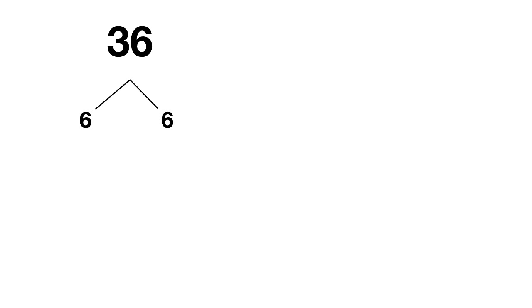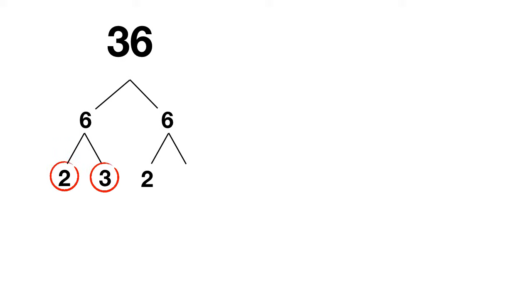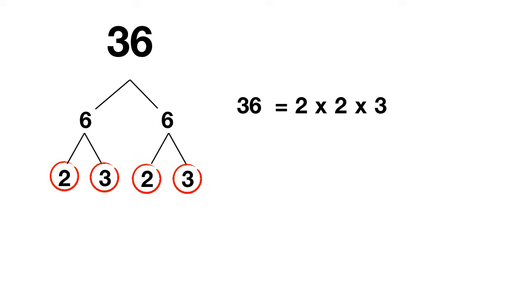Here's your last one for today. What are the prime factors of 36? Well you could split 36 into 6 times 6. Then the first 6 could be split up into 2 times 3, because both of those are prime. And the second 6 can be the same, 2 times 3. Both of those are prime. Now when we write this out, we'll organize our prime numbers from smallest to biggest. So we'll write that 36 is equal to 2 times 2 times 3 times 3.